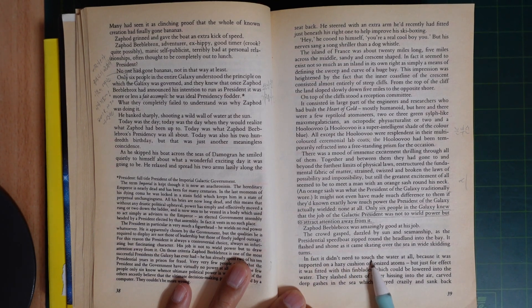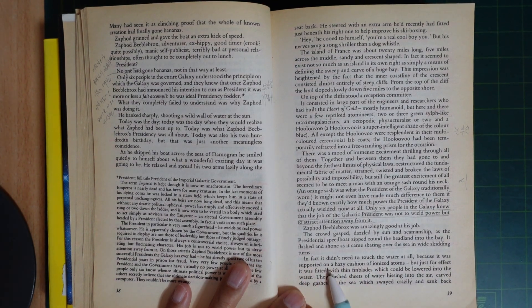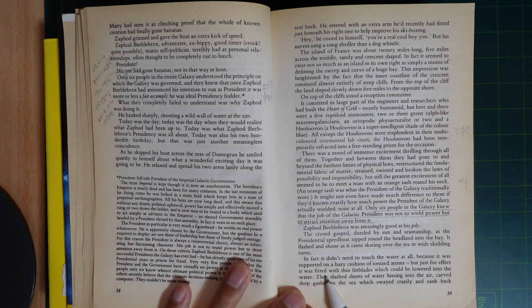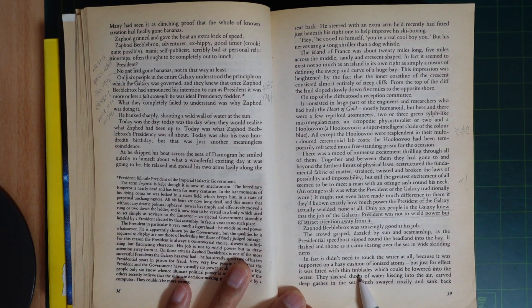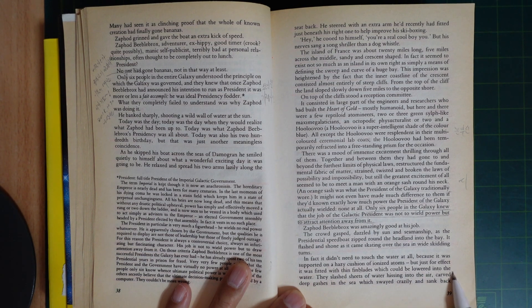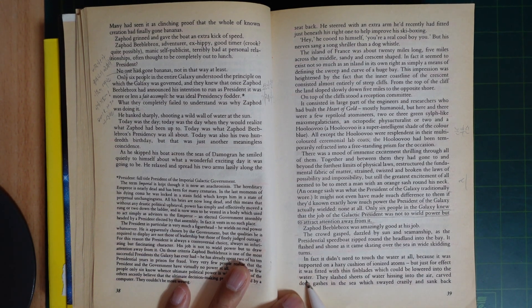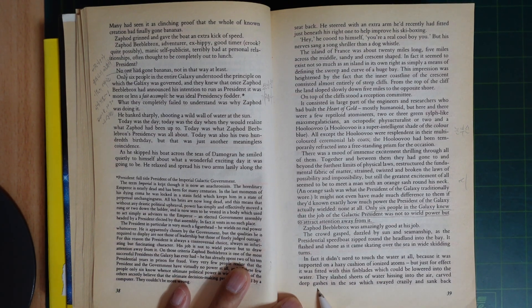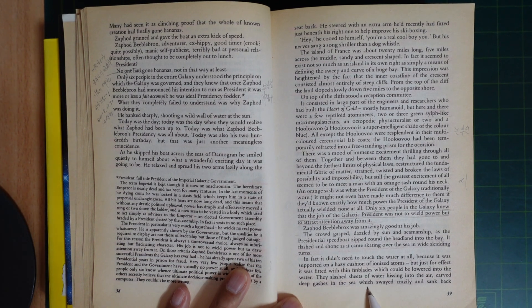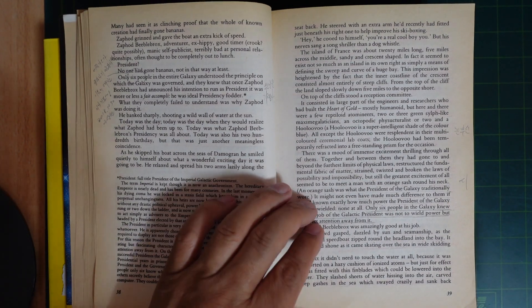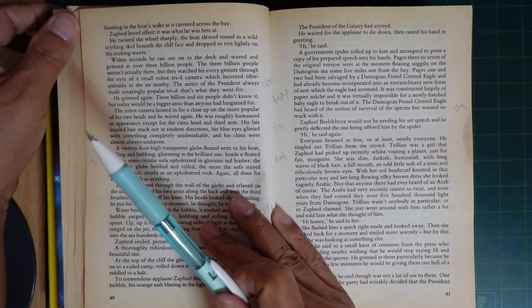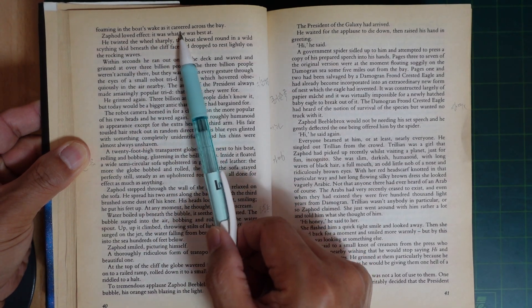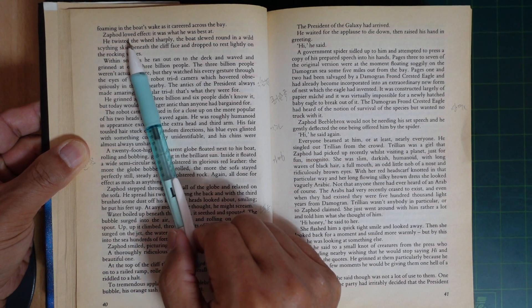In fact, it didn't need to touch the water at all because it was supported by a cushion of ionized atoms. But just for effect, it was fitted with thin finblades which could be lowered into the water. They slashed a sheet of water, fissuring into the air, carved deep gashes in the sea which swayed crazily and sloshed back, forcing the boat to whack as it carried across the bay. Zaphod loved the effect.